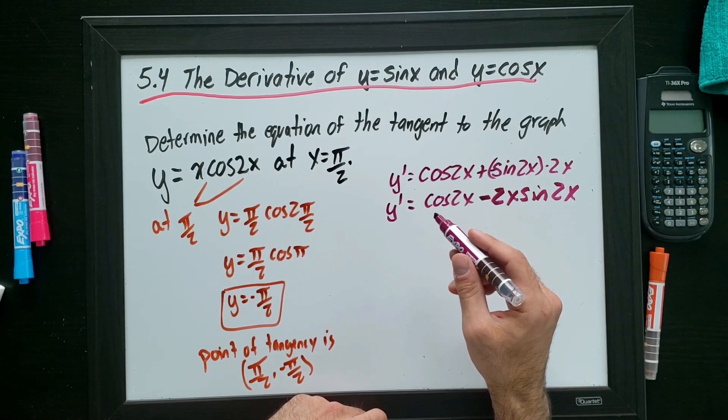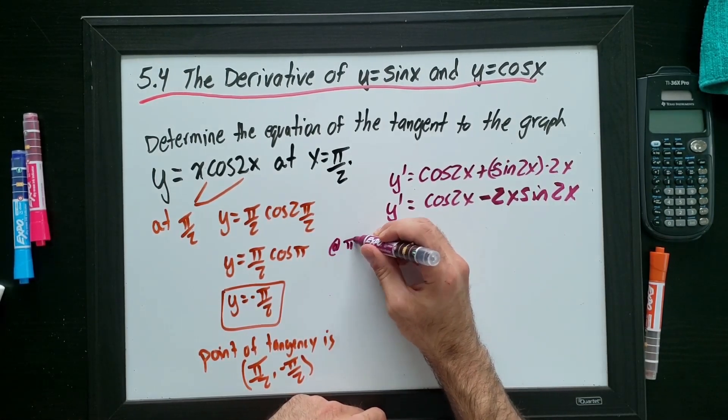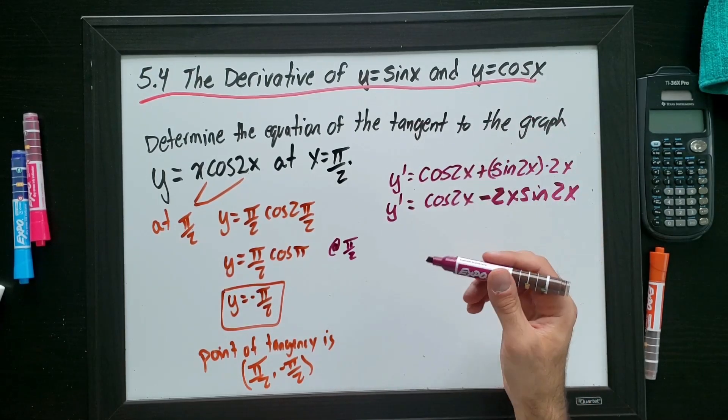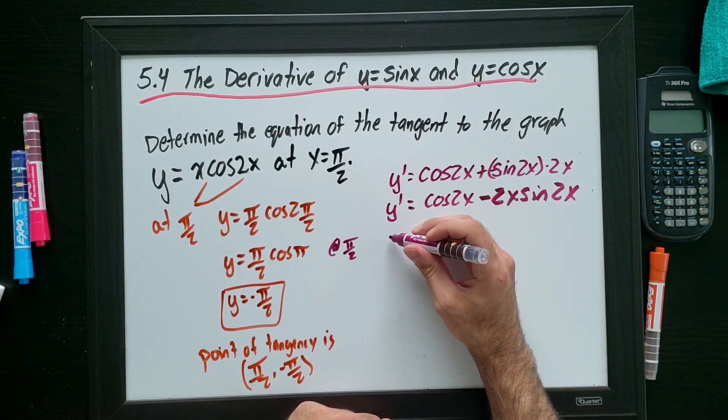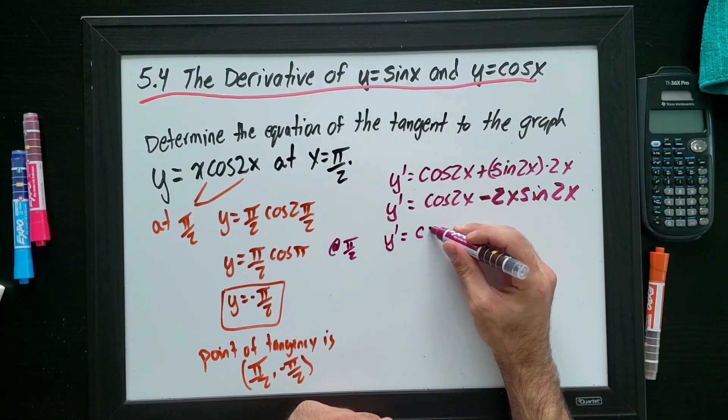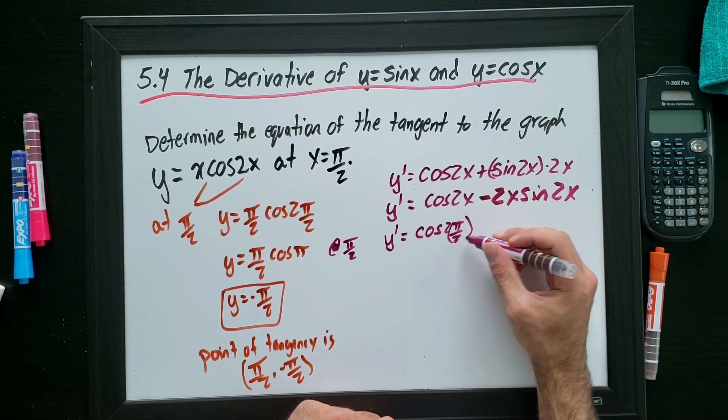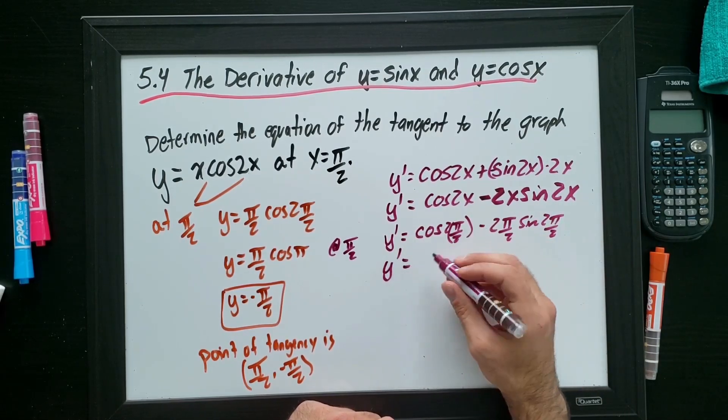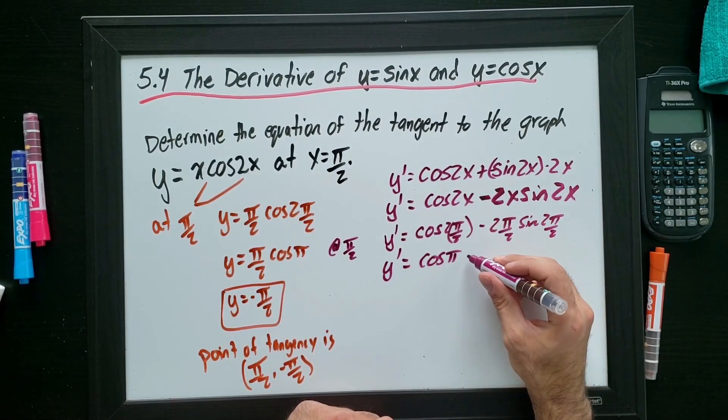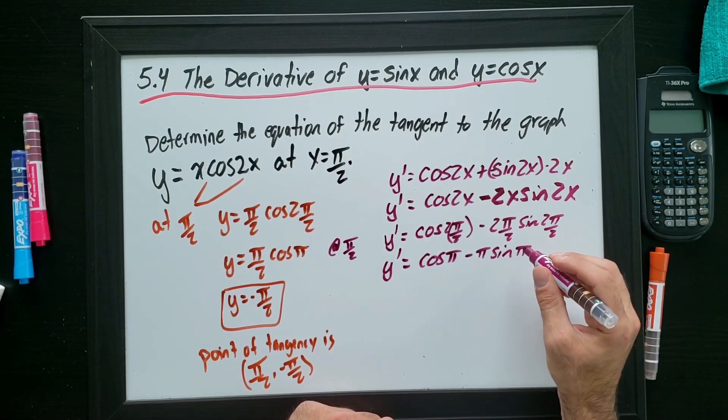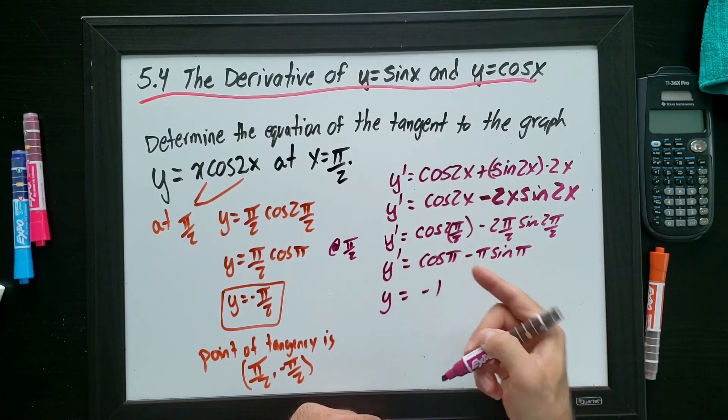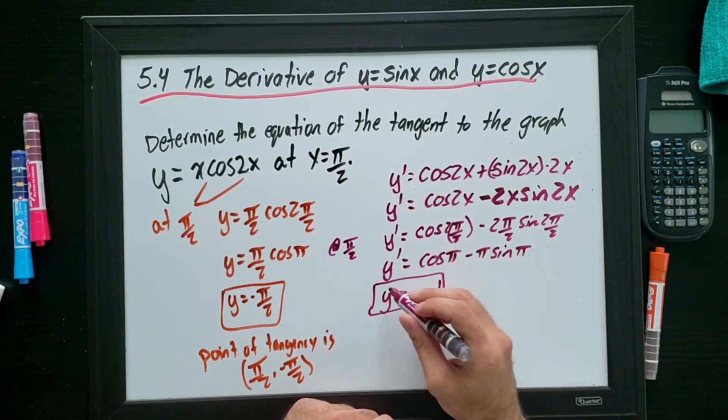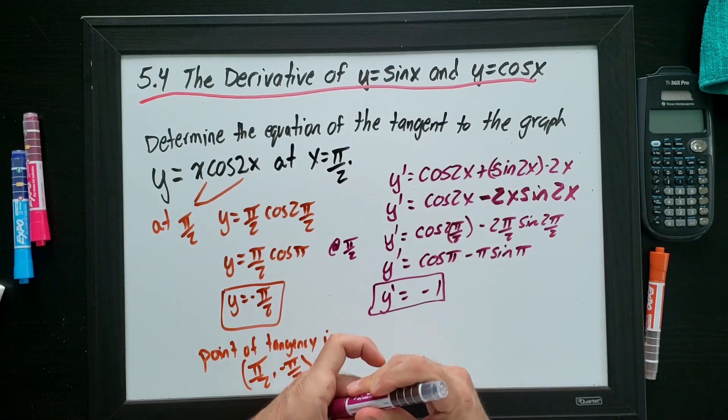Okay. So now I want to plug in pi over 2. So at pi over 2, I want to find what the slope of the tangent is at this point. Because when I have the slope at this point and the slope of tangency, done. I can find the equation of that line. So at pi over 2, y prime is cos 2 times pi over 2 minus 2 pi over 2 sine of 2 pi over 2. So all these half pi's are gone because they're all doubled. Cos pi minus pi sine pi. Okay. Put in your calculator. Now you're going to get negative 1. Okay. That's negative 1. That's 0. So done. Y prime. Sorry. Slope of the tangent is negative 1.